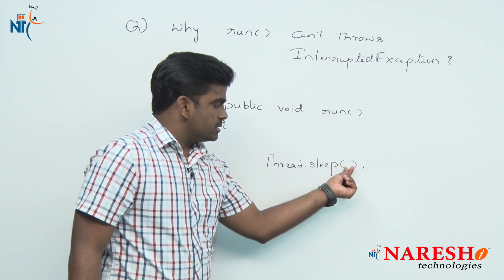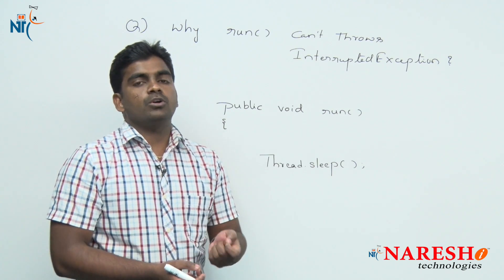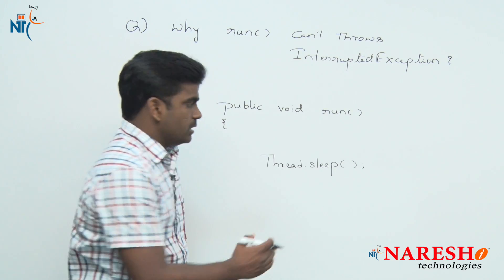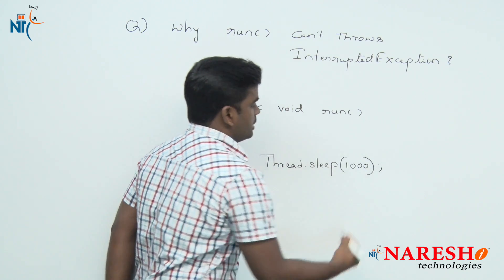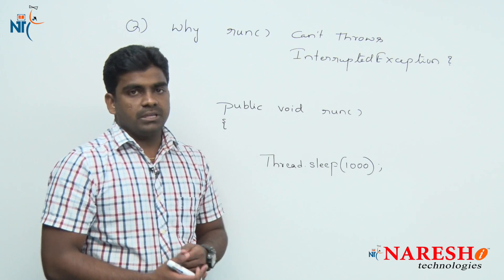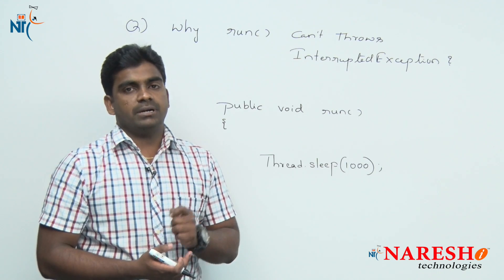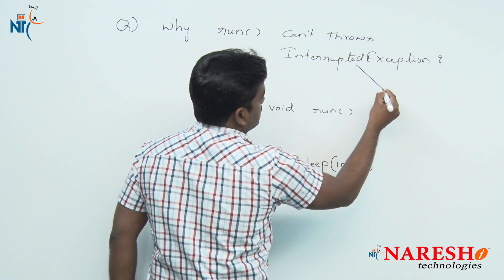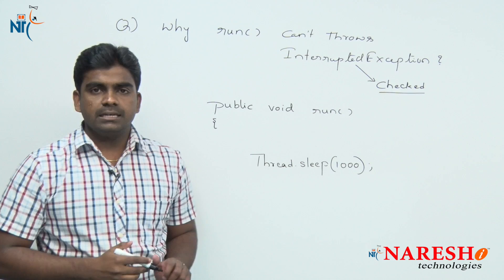We need to pass a time interval in milliseconds. For example, if you want to put the thread in sleep mode for one second, we need to pass 1000 milliseconds, since 1000 milliseconds equals one second. Whenever you call the sleep method, it throws one exception — InterruptedException — and we need to understand that InterruptedException is a checked exception.